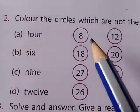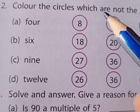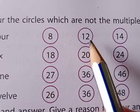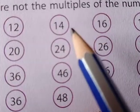So in the table of 4, 8 comes, 2 times. So 8 is a multiple of 4. No need to colour this 8. Then 12. In the table of 4, 12 also comes, 3 times. So no need to colour this 12 also. Now this 14.